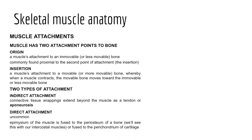As we continue our study of gross anatomy of muscle, we can consider how muscle is attached to bone, looking at the terms origin and insertion. The origin is a muscle's attachment point to an immovable or less movable bone, typically found proximal to the insertion. The insertion is defined as the attachment point to movable bone, whereby when a muscle contracts, the movable bone moves toward the immovable or less movable bone. Muscles may attach by direct attachment, where the epimysium is fused to the periosteum of bone.